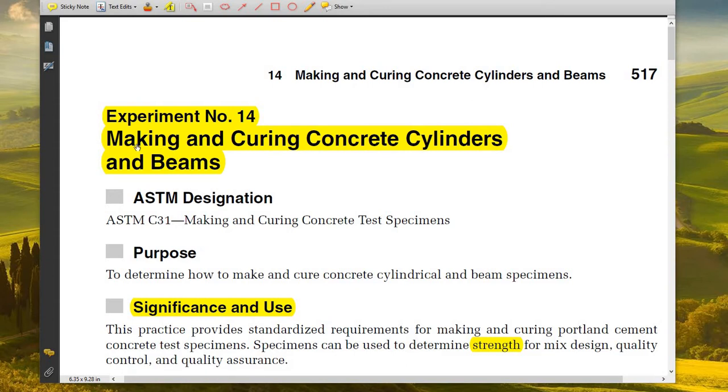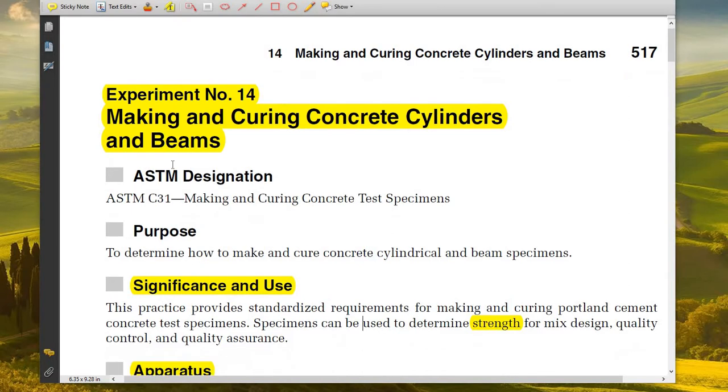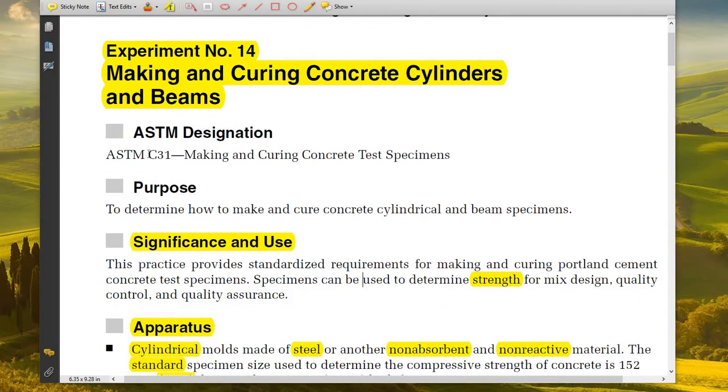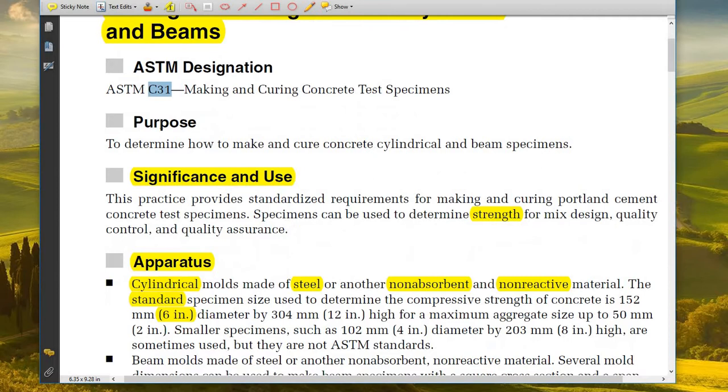Hello, this is today's experiment. We are going to make and cure concrete cylinders and beams. The ASTM designation that is going to be used is ASTM C31, which is related to making and curing concrete test specimens.